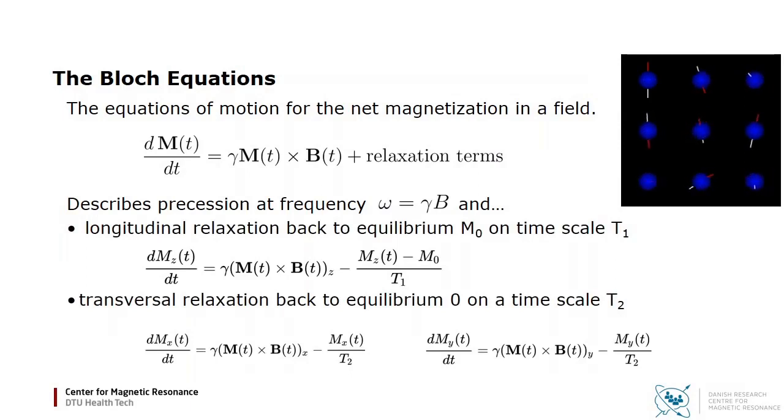Importantly, the individual nuclei do not return to equilibrium. They each precess in a magnetic field, as you see here, disturbed slightly by weak interactions with other nuclei. Hence, they are gradually reoriented randomly, which brings the sample as a whole back to thermal equilibrium.